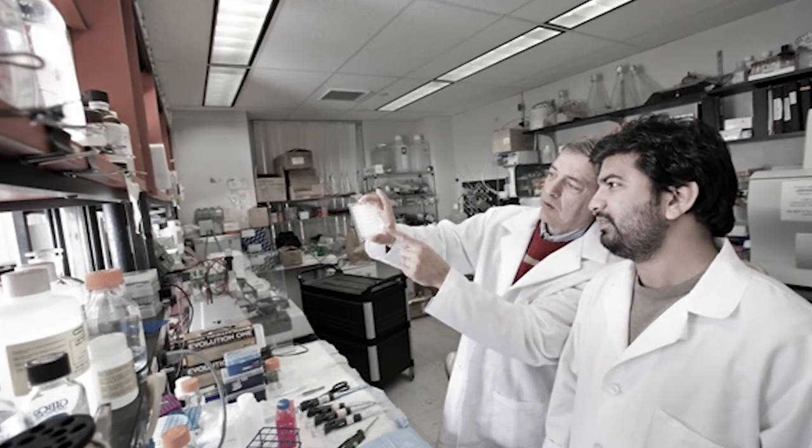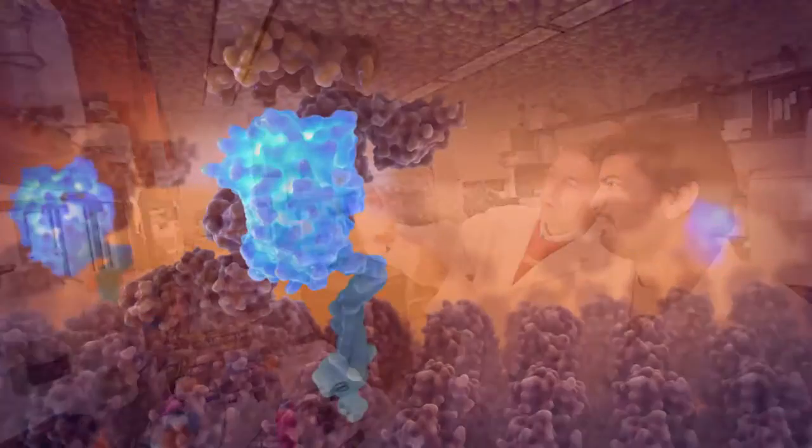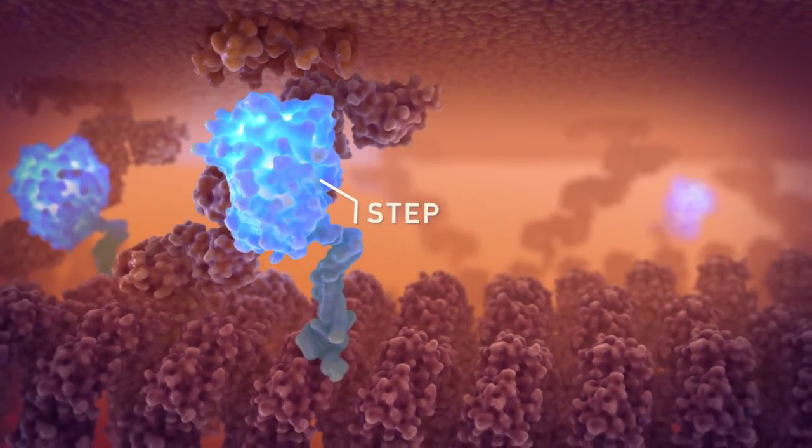The story starts about 20 years ago when I discovered a protein called STEP. STEP is elevated in humans with Alzheimer's and in mouse models of Alzheimer's disease, and that's bad. And the reason it's bad is that it prevents the formation of new memories.